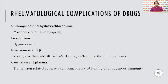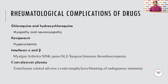Hematological complications of drugs used for COVID: chloroquine and hydroxychloroquine can themselves produce myopathy and neuromyopathy. Favipiravir can cause hyperuricemia. Interferon alpha and beta can cause myalgia, arthritis, musculoskeletal pains, SLE, Sjogren's, and immune thrombocytopenia. Convalescent plasma, which is often recommended, can cause transfusion-related adverse events, anaphylaxis, and sometimes blunting of endogenous immunity.